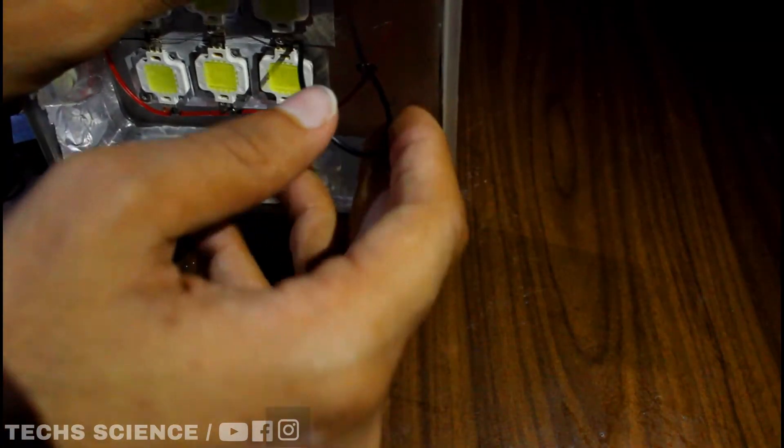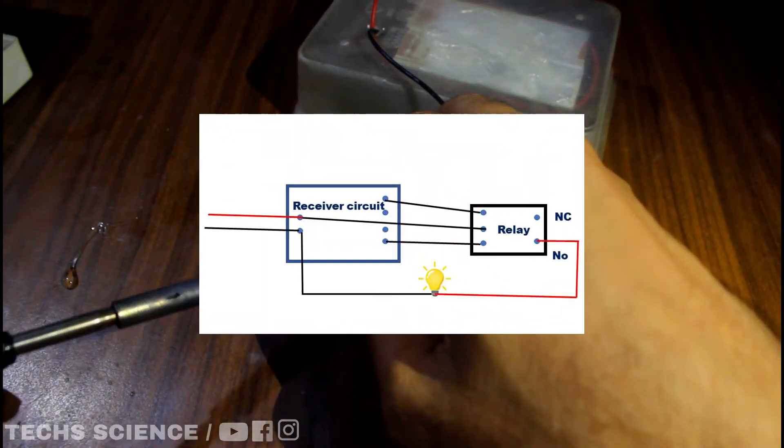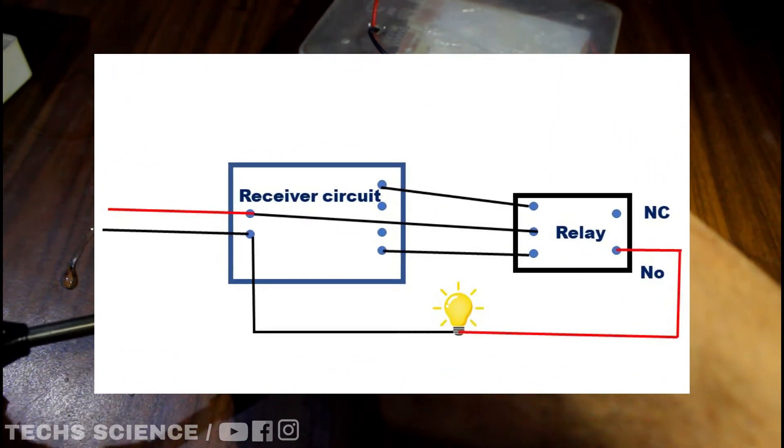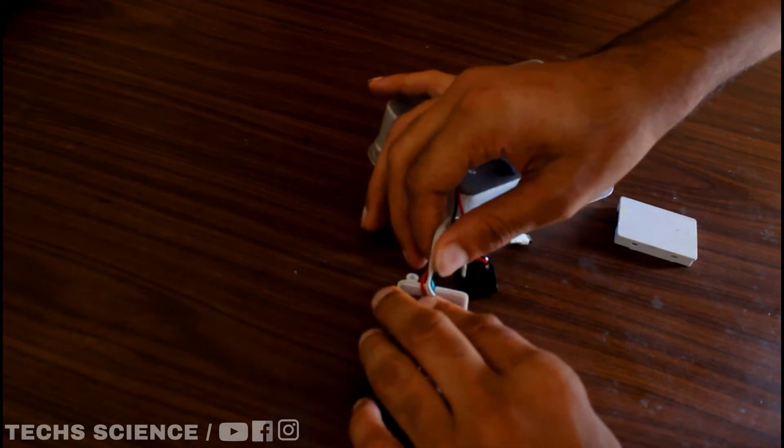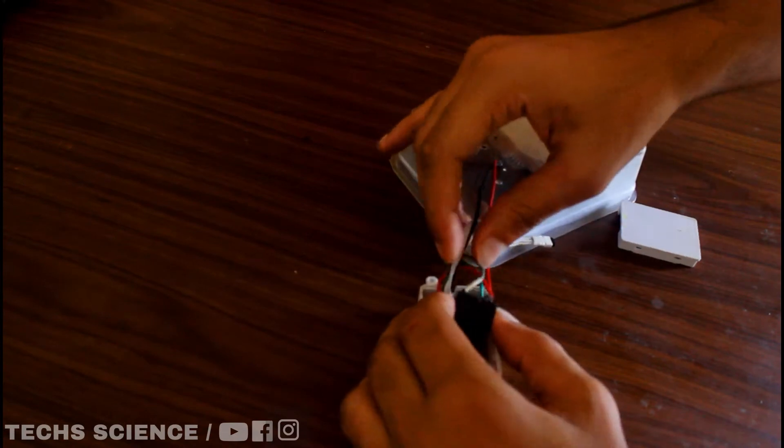Here I am using the IR remote control module which I used in my previous project. The circuit diagram is quite easy as you can see in the figure. Still, if you don't understand, leave a comment below and I will surely help you.